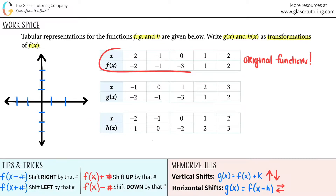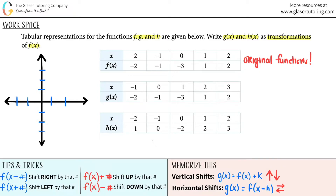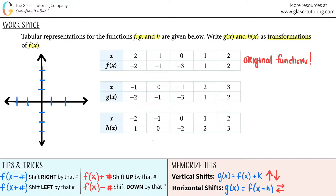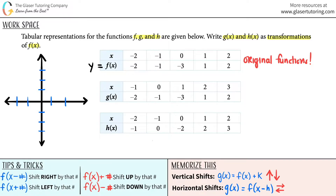The first thing I'm going to do is plot these very nice points over here. I have a graph over here. Remember, just know that f of x is a fancy way of saying y. So they gave you x and y coordinates. So let's plot the f of x graph. I'm going to do it in red.